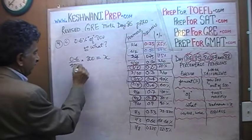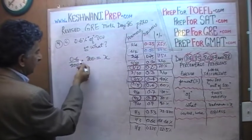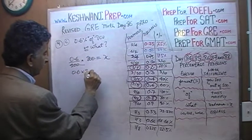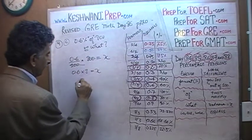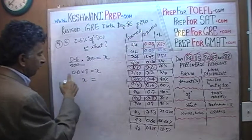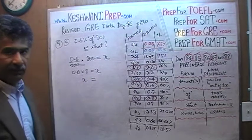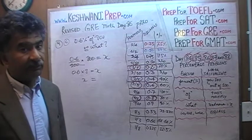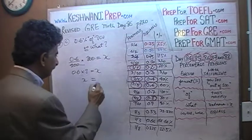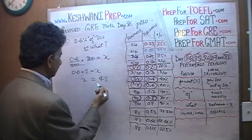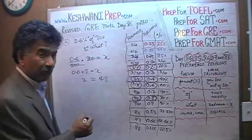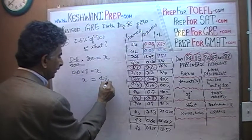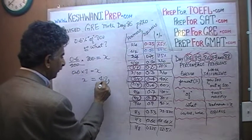Divide the top and bottom by 100 and it's just 0.6 times 8, and that's your answer. X equals — well, how much is 0.6 times 8? We know 6 times 8 is 48, but it's not 6, it's 0.6. Because it's 0.6, you move the decimal one place, so the answer is 4.8.